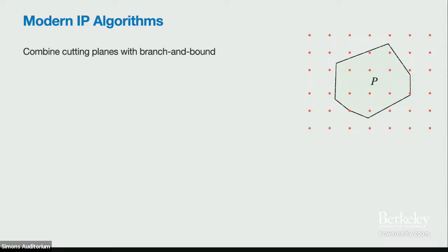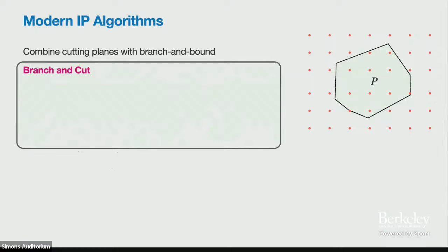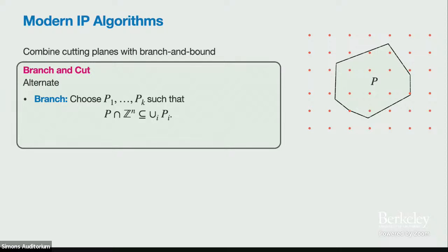What do modern integer programming algorithms do? Most implement branch-and-cut, which combines CG cuts with a branch-and-bound procedure. It alternates between two steps: first, a branching procedure where we take our polytope and break it up into sub-polytopes.